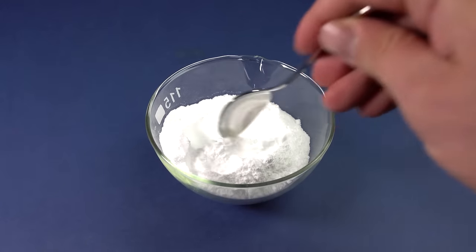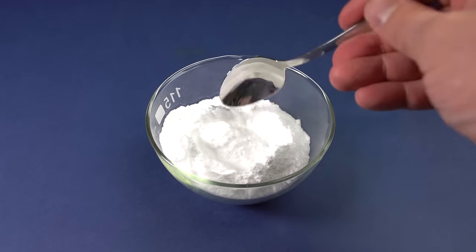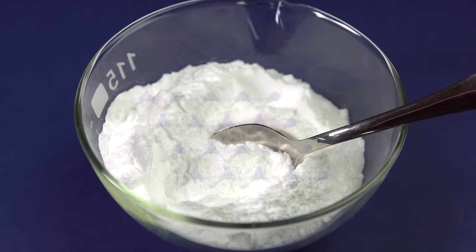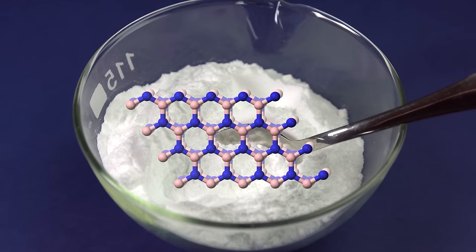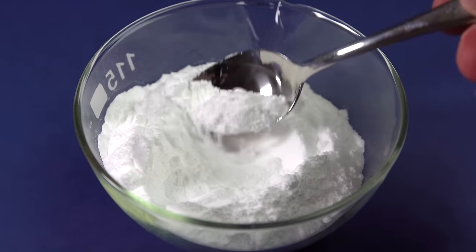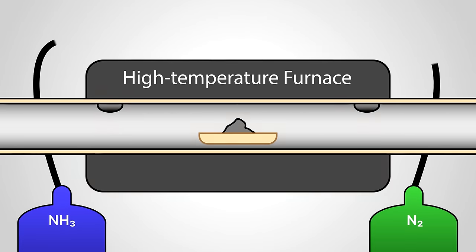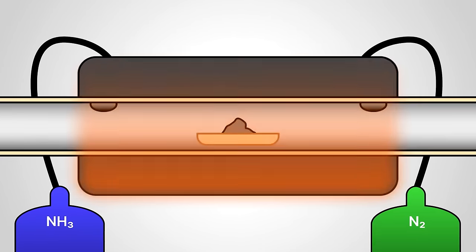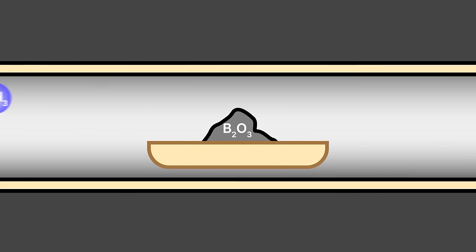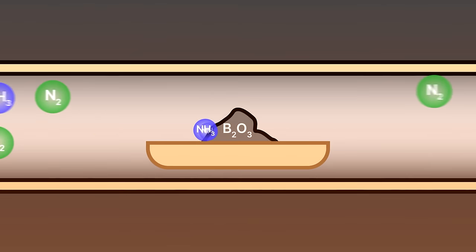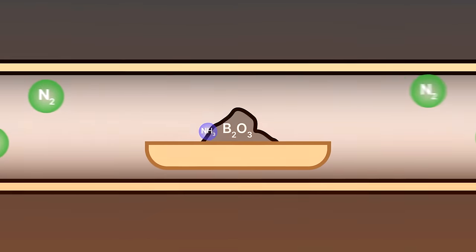Besides silicon carbide, we should mention another material with a hardness comparable to that of a diamond. It's boron nitride, the so-called hexagonal modification of which looks like an ordinary white powder. It's obtained in special furnaces, where boron oxide and ammonia react with each other at a temperature of 1650 degrees Fahrenheit, with nitrogen gas blowing through a quartz tube to create a protective, oxygen-free environment.